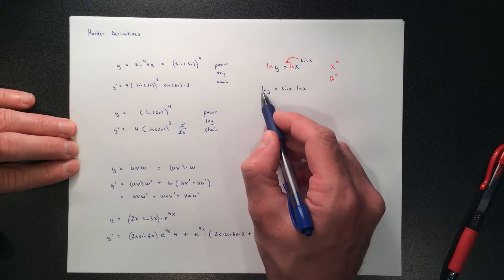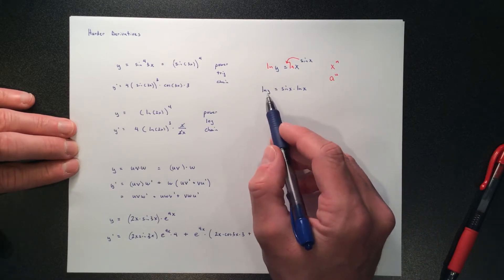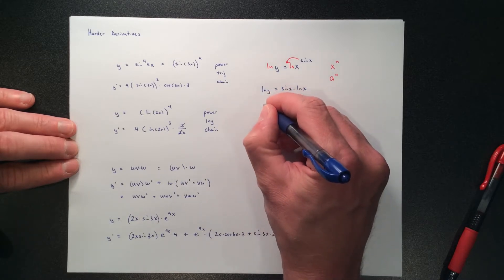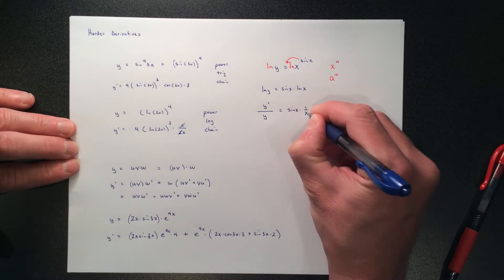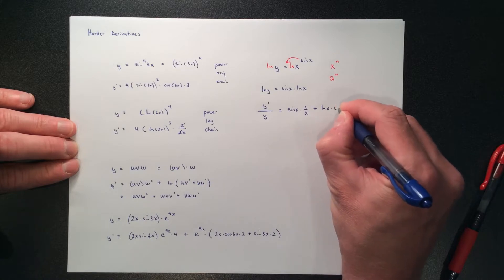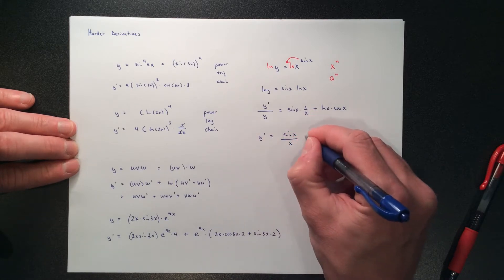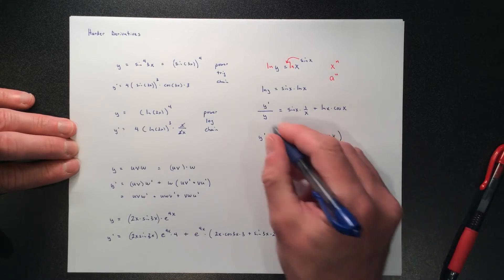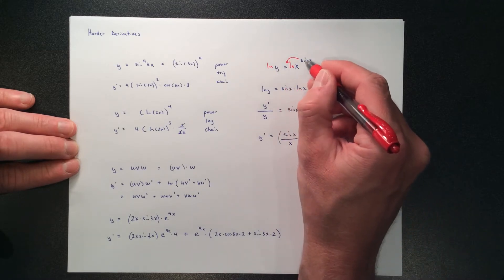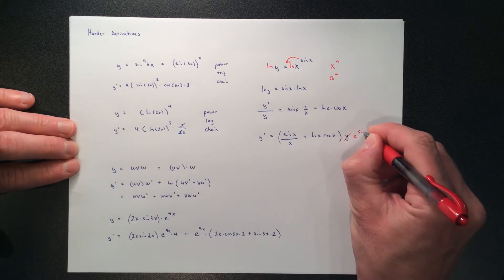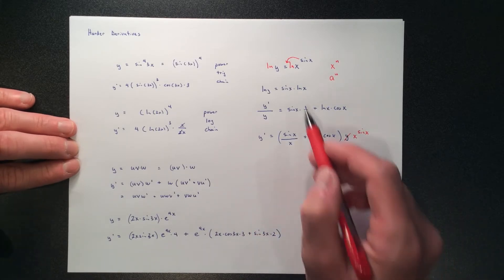Taking the derivative of ln(y) gives y prime over y on the left side — look back at implicit differentiation if that's unclear. On the right side, we apply product rule: sine(x) times 1/x plus ln(x) times cosine(x). So y prime equals y times (sine x over x plus ln(x)·cosine x). Since y equals x^(sin x), we substitute that in and get the derivative purely in terms of x. It's messy, but that's about as simple as it gets for a fairly complex question.